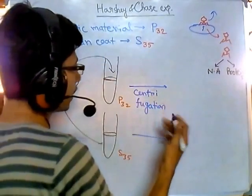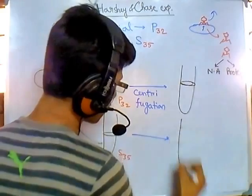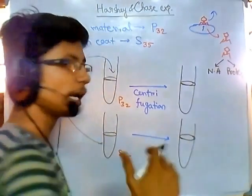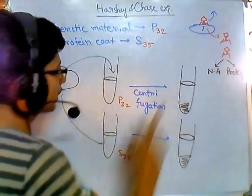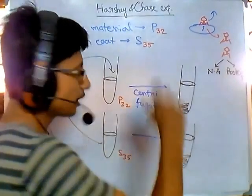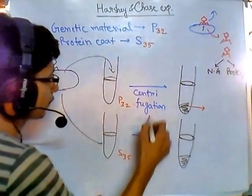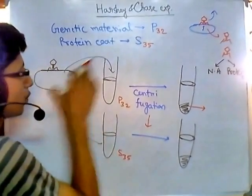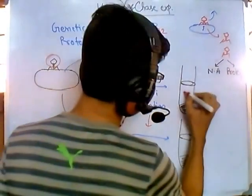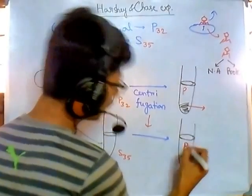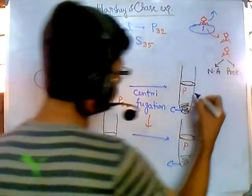After centrifugation, two fractions are always produced: the supernatant and the pellet. The supernatant carries smaller, lighter particles, while larger, heavier molecules settle down into the pellet. They expected that bacterial cells would settle into the pellet, while the protein coats of the phage — being lighter — would remain in the supernatant, or soup.